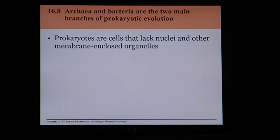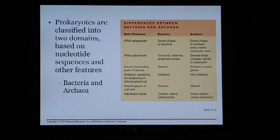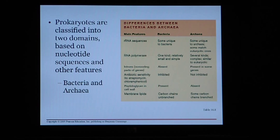Prokaryotic cells don't have a nucleus or any other membrane-bound organelles. They have a cell wall, a cell membrane, cytoplasm, and DNA, but no nucleus and no other organelles. Prokaryotes are classified into two domains based on their nucleotide sequences and other features: Bacteria and Archaea. Bacteria are our standard run-of-the-mill bacteria, while Archaea survive in very extreme conditions — high ultraviolet light, high levels of acid or base, and extreme temperatures.